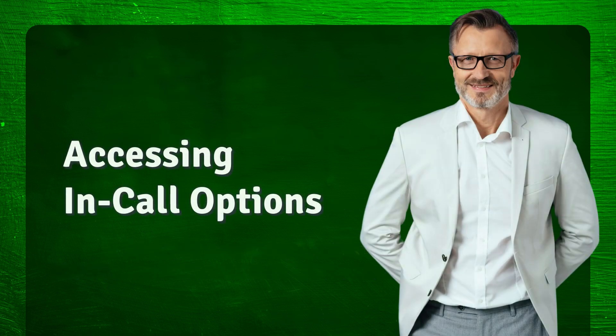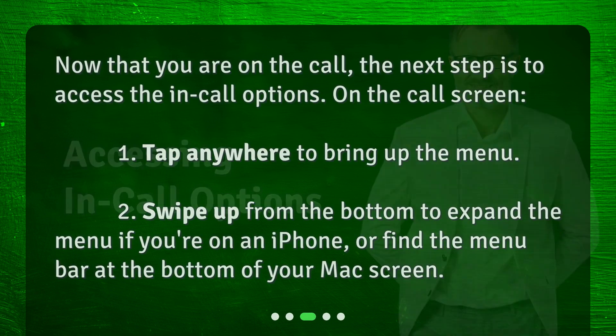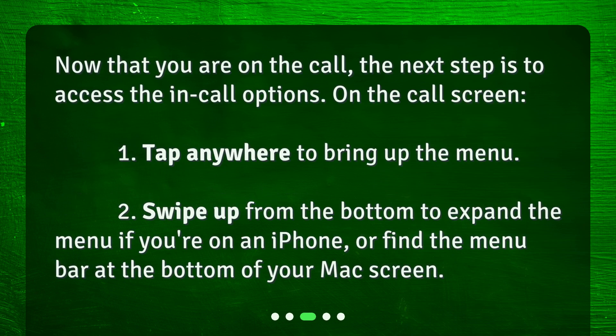Accessing in-call options. Now that you are on the call, the next step is to access the in-call options. On the call screen: 1. Tap anywhere to bring up the menu. 2. Swipe up from the bottom to expand the menu if you're on an iPhone, or find the menu bar at the bottom of your Mac screen.